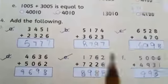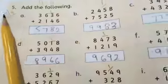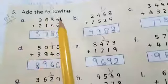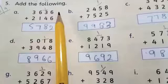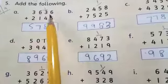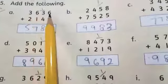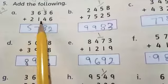Now come to page number 42. On page number 42 we are doing question number 5, so write down date and day. Add the following. In this question we are converting 10s. Start with me, part a is 3636 plus 2146.